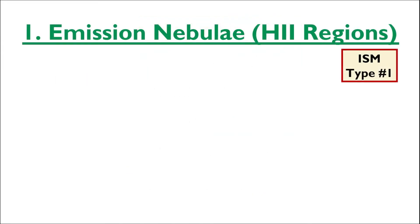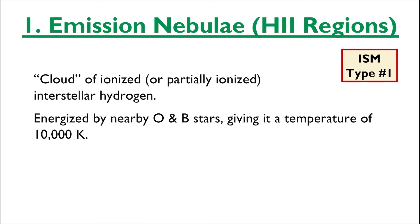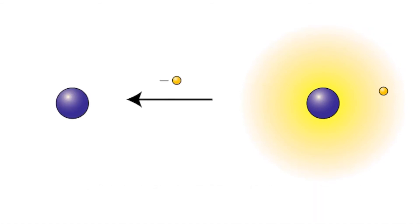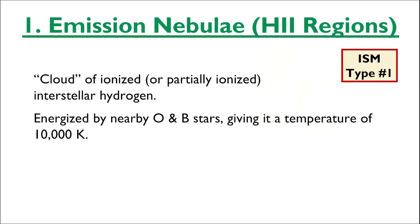The first type of ISM that we'll look at is the emission nebula, otherwise known as an H2 region. These emission nebulae are clouds of interstellar hydrogen that have been energized by nearby O and B type stars such that their temperature has risen to 10,000 Kelvin, meaning the hydrogen atoms are most likely singly ionized. Where you would normally see the notation H+ in chemistry indicating ionized hydrogen, astronomers use the Roman numeral 2 instead, since Roman numeral 1 indicates neutral hydrogen.